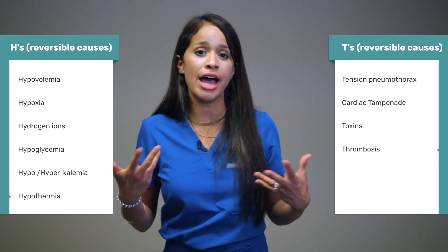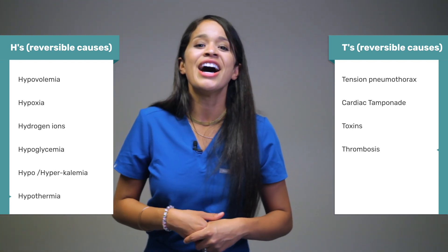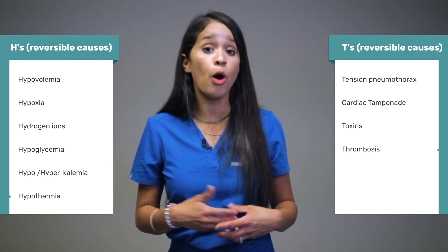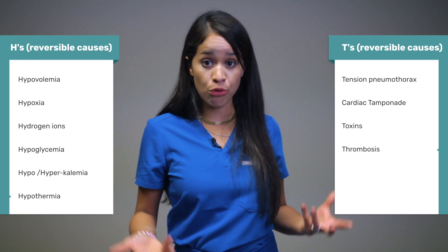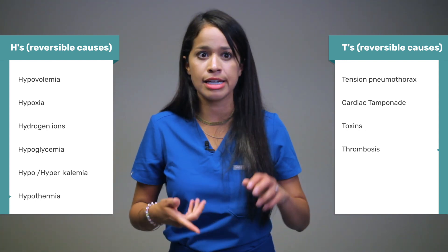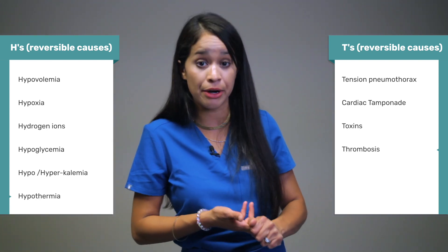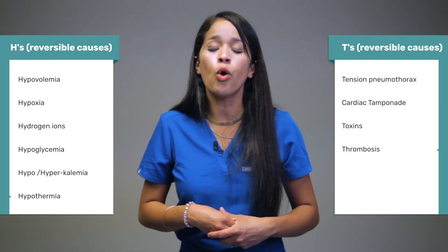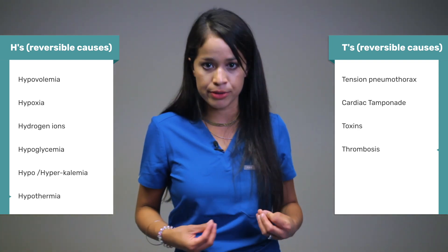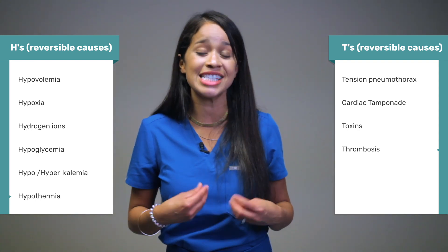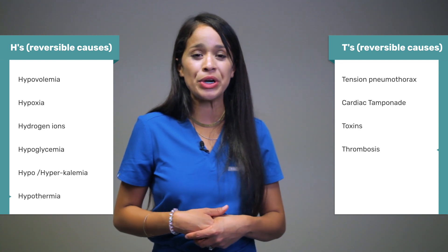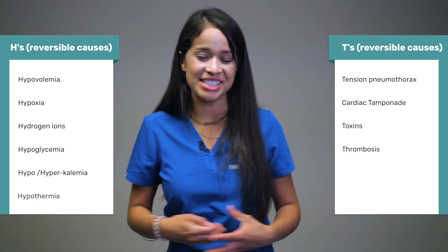The last T is for thrombosis — such as a pulmonary thrombus, which can be treated with anticoagulants or fibrinolytic therapy, or a coronary thrombosis, which can be treated with a stent placement or coronary bypass.